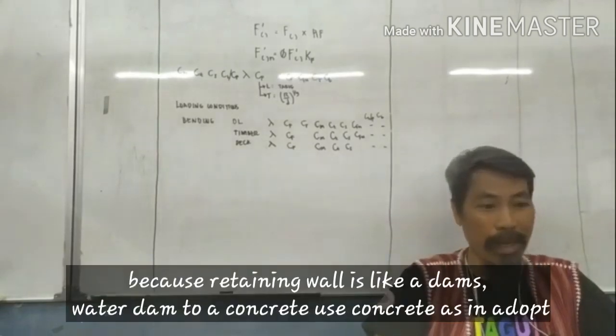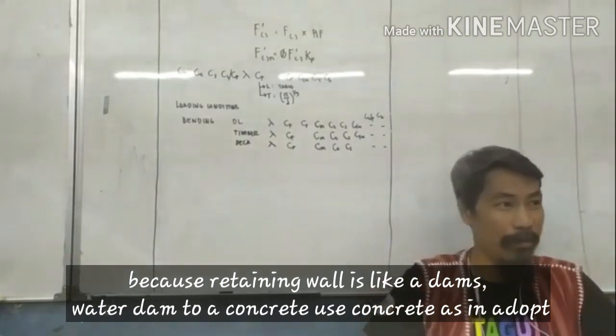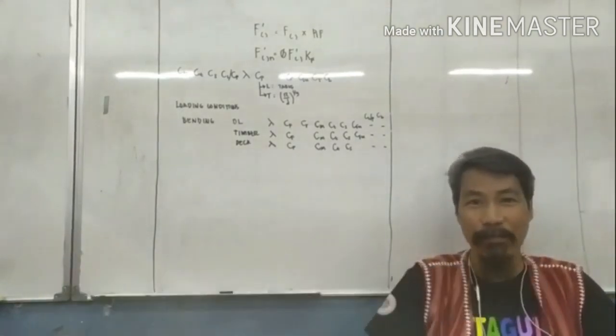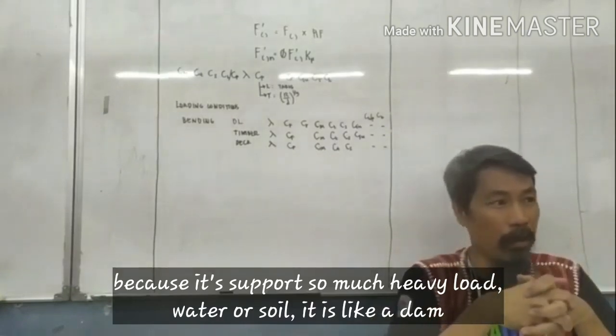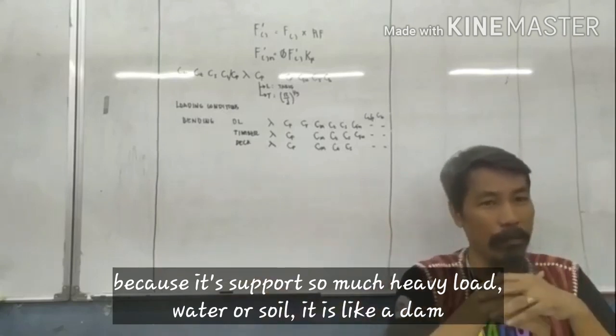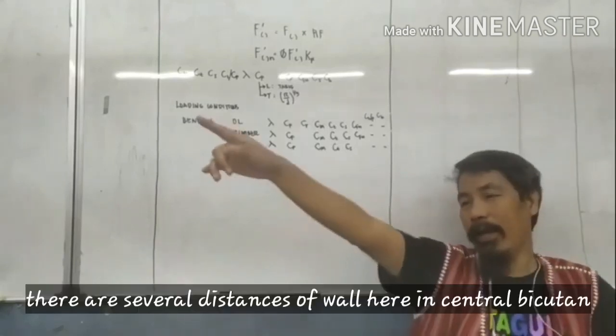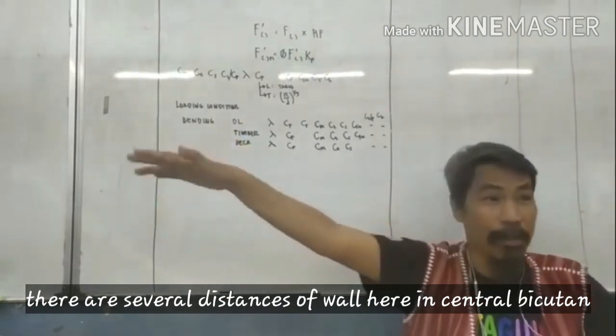Because retaining wall is like a dam, water dam. You have to concrete, this concrete, because it supports so much heavy load or water or soil. It is like a dam.